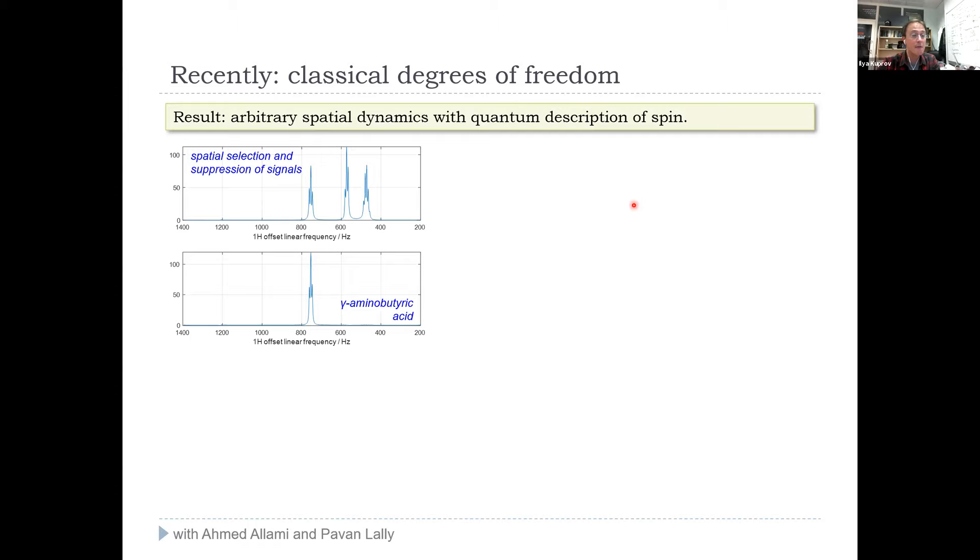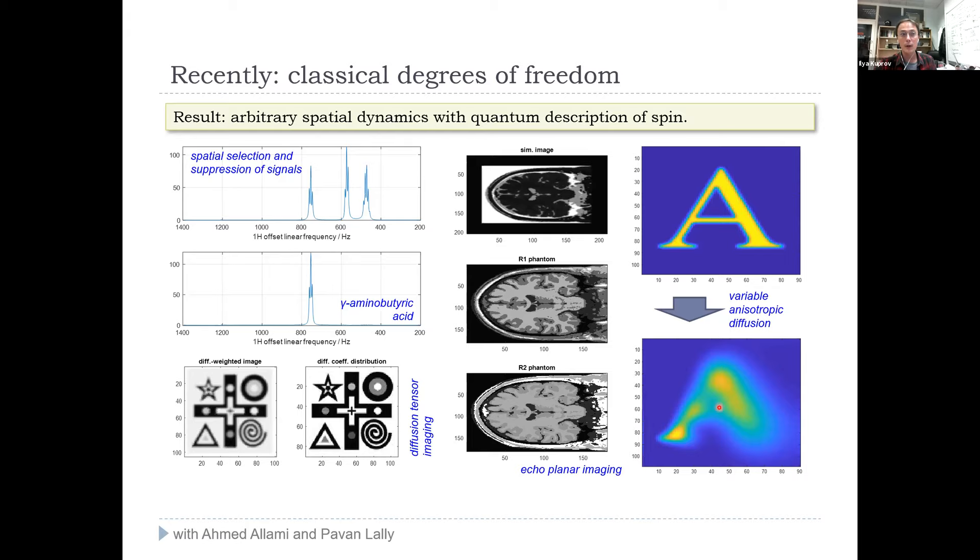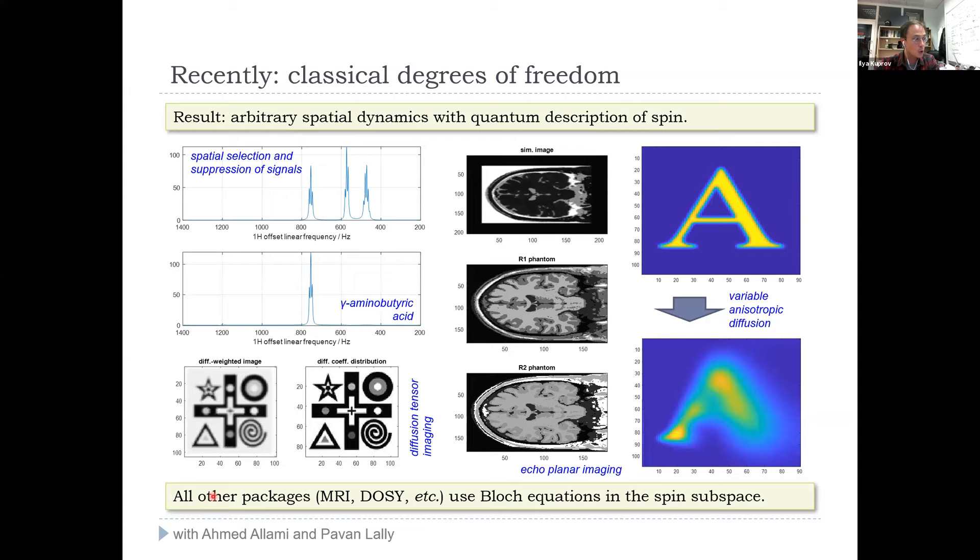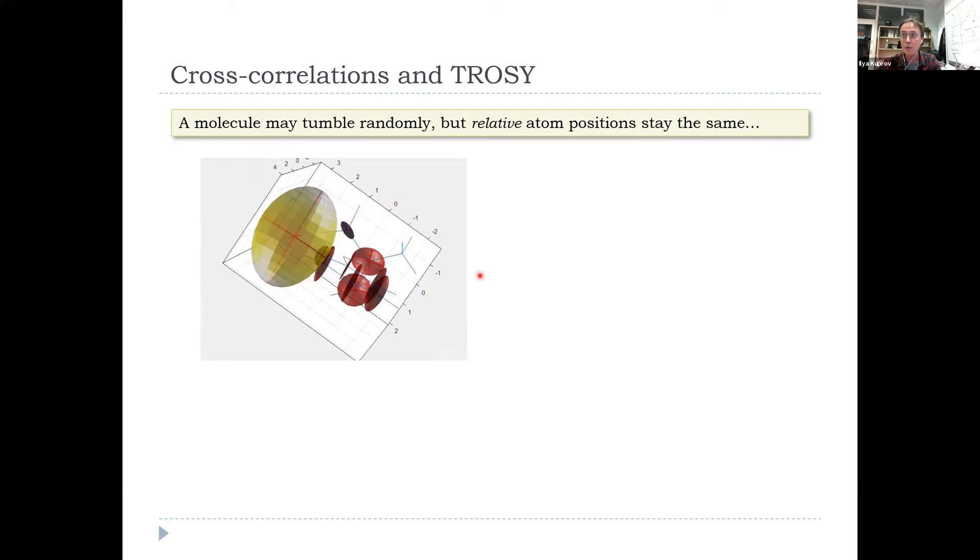Very recently we implemented classical degrees of freedom, so all the MRI stuff but quantum mechanically. Spinach MRI simulations will account for J couplings, will account for accurate relaxation theory, everything. For example, DT-PGSE with explicit spatial gradients across a finite grid in space. Diffusion tensor imaging and such like. Ecoplanar, all the usual stuff with, for example, variable diffusion. Different diffusion tensors and different voxels, including different diffusion anisotropies and such like. Ahmed Alami's PhD thesis, this one. So all other packages only use Bloch equations in the spin subspace. In the case of Spinach, this is full Liouville von Neumann. It's actually Fokker-Planck equation. So Liouville von Neumann Kronecker spatial dynamics there. So all cross correlations, obviously, I don't need to tell this group what a cross correlation is. You invented methyl TROSY, if memory serves.